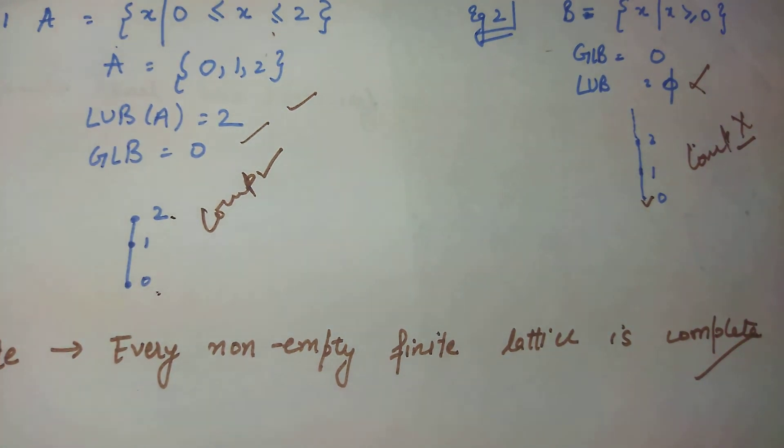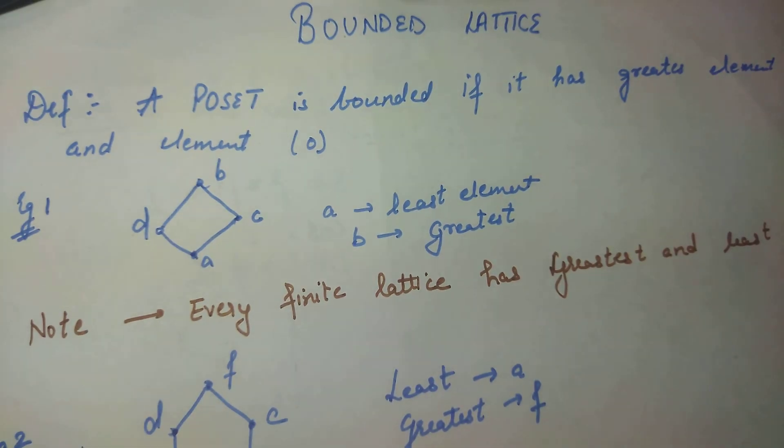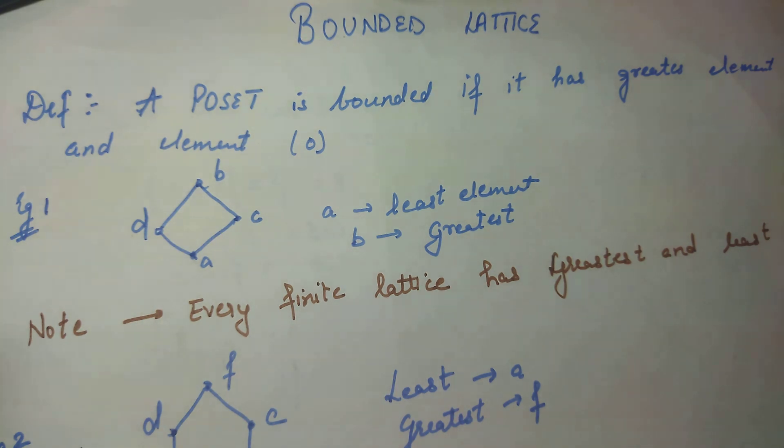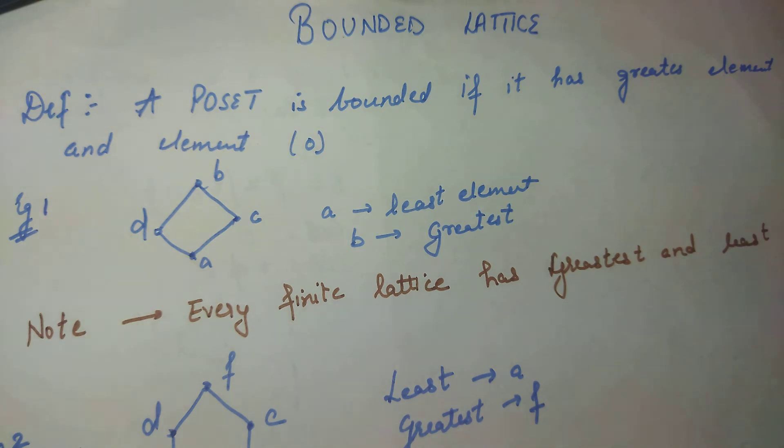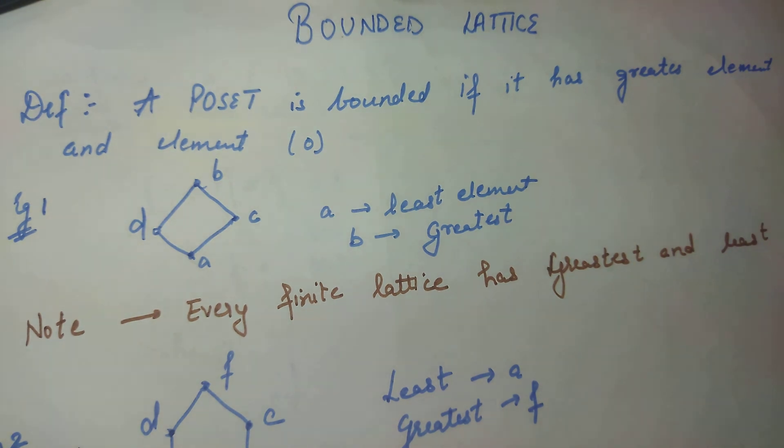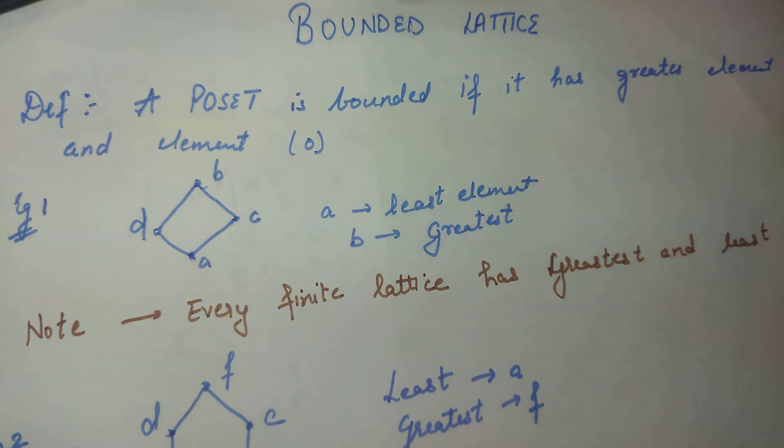I hope the things are clear to you. Now see bounded lattice: what is the most important? If it has the greatest element which is 1, which we call upper bound, and the lowest element is 0, which we denote from 0, which we call lower bound.